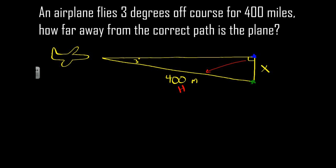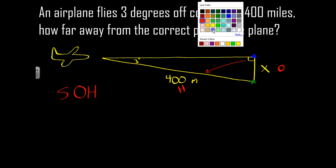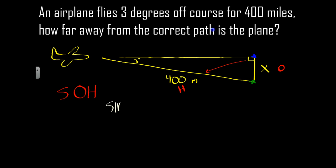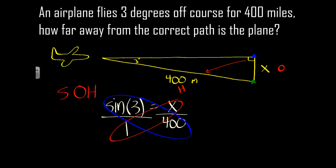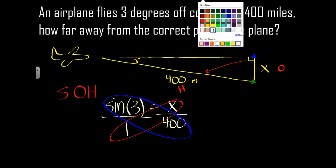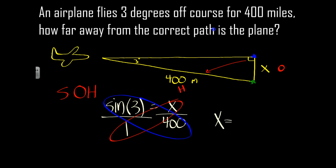And X is opposite of 3, so that's my O. So O and H use the sine ratio. And so we'll set up the sine of 3 degrees is equal to X over 400. Okay, put that over 1. Use my cross products, my variables in the numerator here, so I'm going to end up multiplying. And so my X times 1 equals 400 times the sine of 3 degrees.